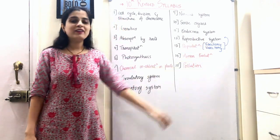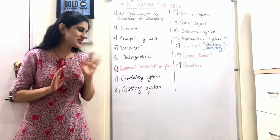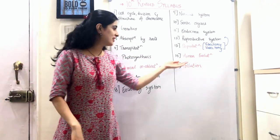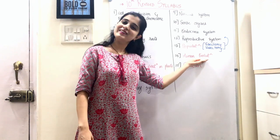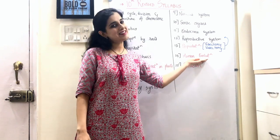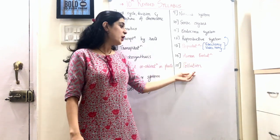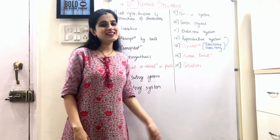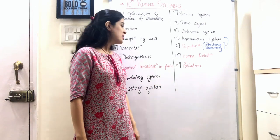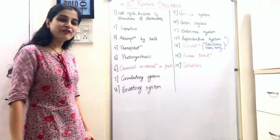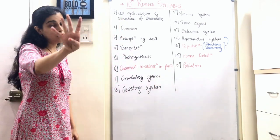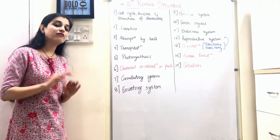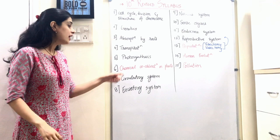Human Evolution — that chapter has already been cancelled by the board. Pollution — super minor chapter — the board has cancelled that too. So out of the 15 chapters, 4 chapters have been cancelled in total.